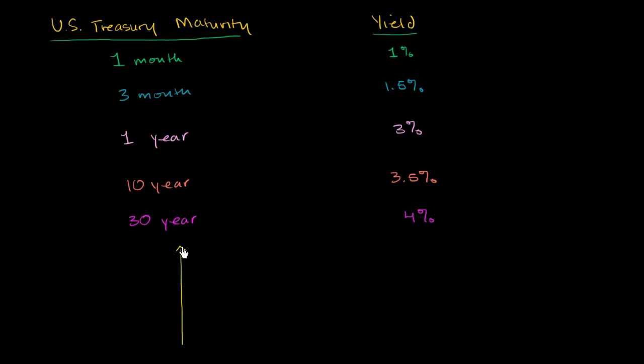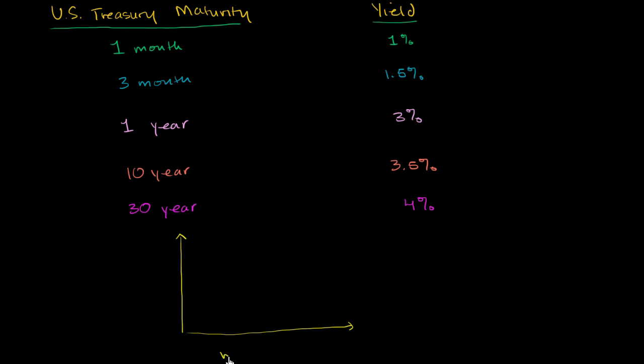So let me draw a yield curve right over here. So on this axis, I will put maturity. And we have a bunch of different maturities. We have one month, let's squeeze it, one month.